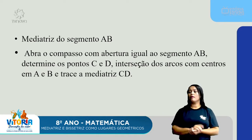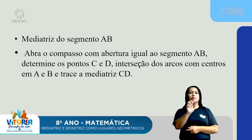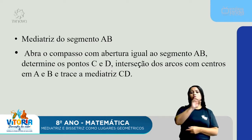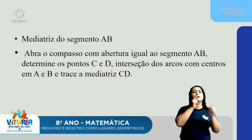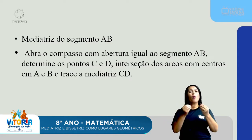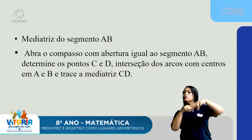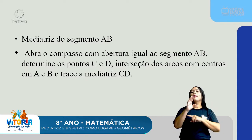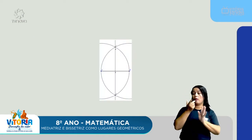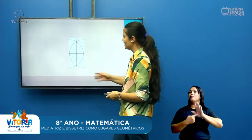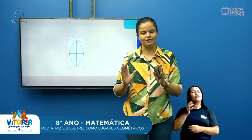Nós também temos a mediatriz do segmento AB. Abra o compasso com uma abertura igual ao segmento AB. Determine os pontos C e D, a interseção dos arcos com centros em A e B. E trace a mediatriz CD. Eu já trouxe aqui a figura pronta e vou mostrar a vocês o passo a passo como é que a gente faz.